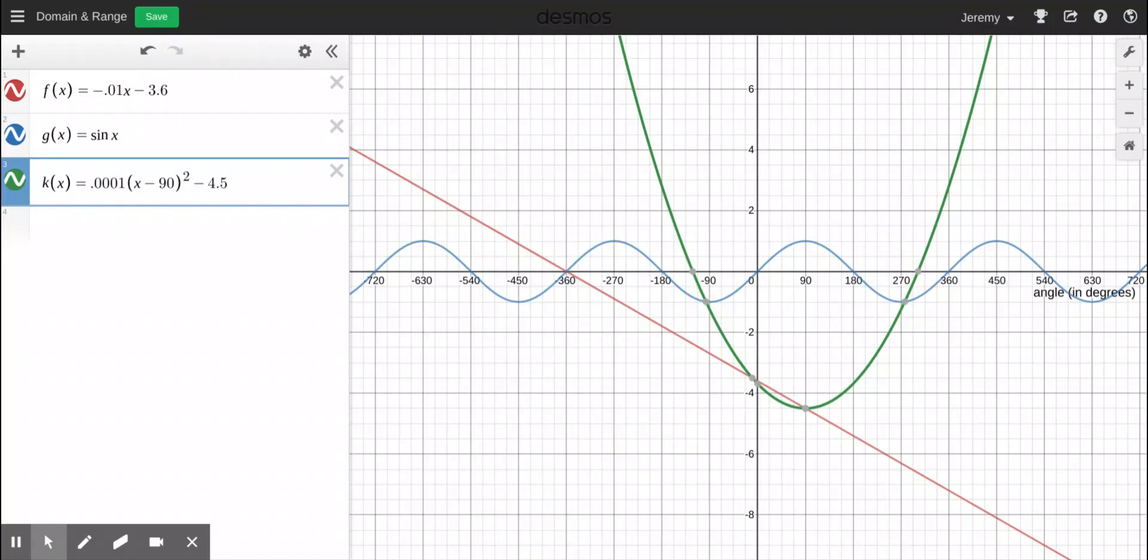Hello! I'm going to explain how to restrict the domain or range of a function on Desmos. So I've got three functions here: a parabolic quadratic function, a sinusoidal function, and a linear function.